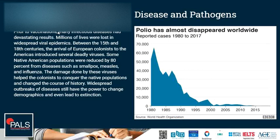Prior to vaccination, many infectious diseases had devastating results on humanity, and millions of lives were lost in widespread viral epidemics. Between the 15th and 18th century, the arrival of European colonists to the Americas introduced several deadly viruses. Some Native American populations were reduced by 80% from diseases such as smallpox, measles, and influenza. The damage done by these viruses helped the colonists conquer the native populations and changed the course of history.